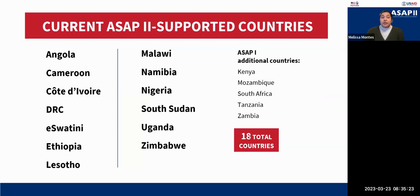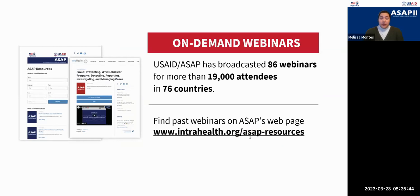The bolded countries on the map are our current ASAP2 supported countries. I see many of you are calling in from some of these countries. We also supported additional countries during ASAP1 for a total of 18 different countries. For these webinars, most are available on demand. This will be our 86th webinar, and many of you have joined us for multiple ones. We've had more than 19,000 attendees from 76 different countries, and we'll share the link to access past webinars in the chat shortly.